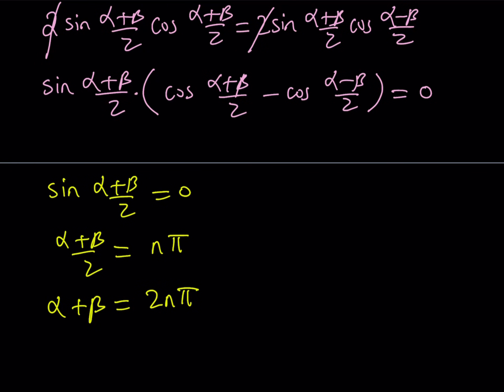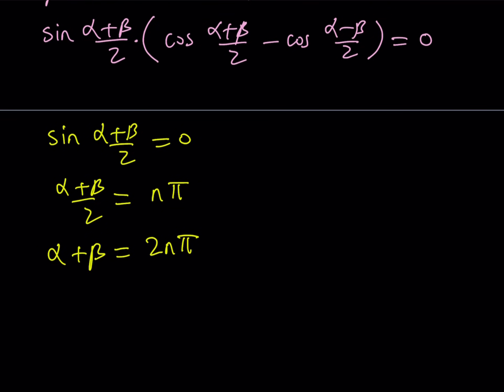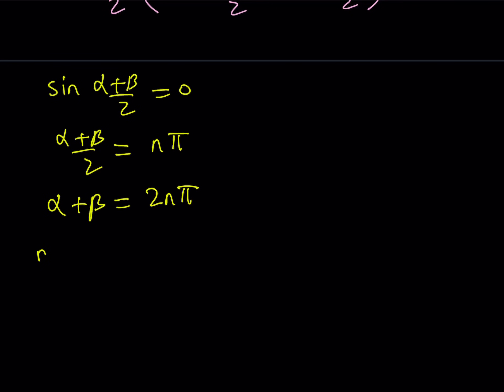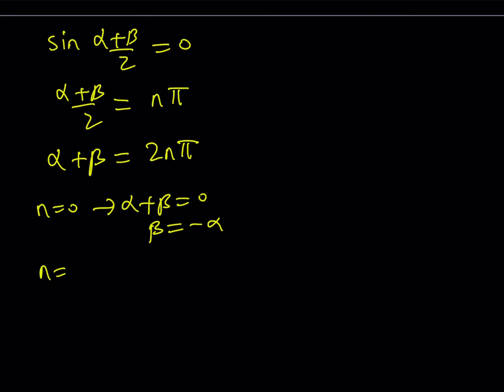In other words, alpha plus beta has to be multiples of 2 pi, integer multiples of 2 pi. But if n is equal to 0, then we get alpha plus beta equals 0, which means beta is basically the opposite of alpha, or you can write it as negative alpha.